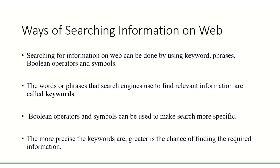The ways of searching information on the web. Searching for information on the web can be done by using keywords, phrases, boolean operators, and symbols. Keywords are the words or phrases that search engines use to find relevant information. Boolean operators and symbols can be used to make a search more specific. The more precise the keywords are, the greater the chance of finding the required information.